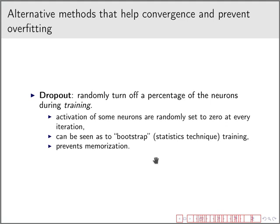Another helpful technique is dropout. This randomly turns off a percentage of the neurons during training. What it's basically doing is hiding some specific neurons so that they do not over-specialize. For example, if neuron 3 is deactivated in one iteration, the other neurons will have to make up for it. So with dropout, I'm learning how to compensate for the fact that some neurons might be wrong. It can be seen as a bootstrap technique from statistics and it prevents memorization — prevents every neuron from memorizing the training instances.